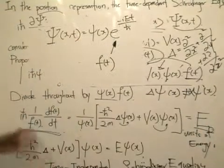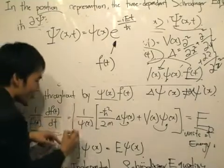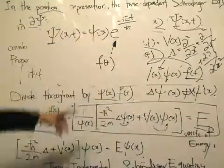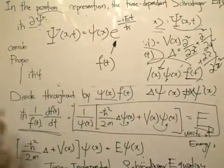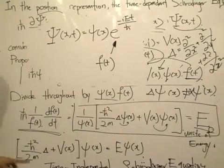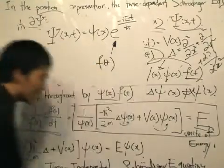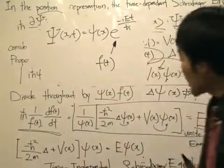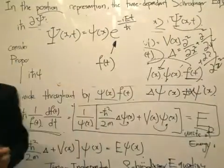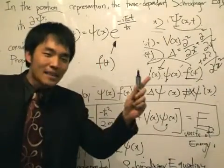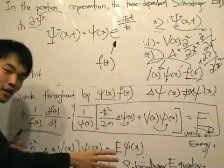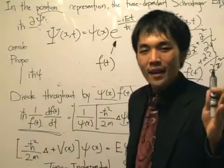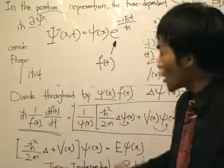Going back to the equation, we look at the spatial part: rearranging and bringing φ(x) over, we get the time-independent Schrödinger equation. This is the equation we are going to work with going forward — solving the time-independent Schrödinger equation. We can solve it more easily because we have eliminated t from the equation.